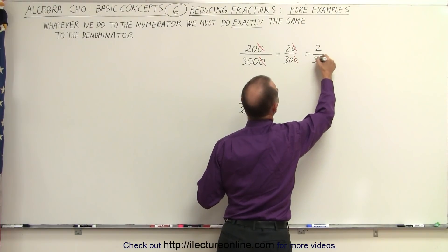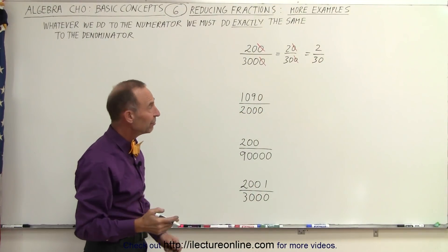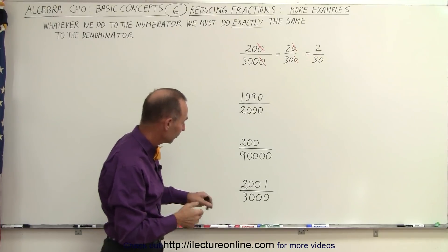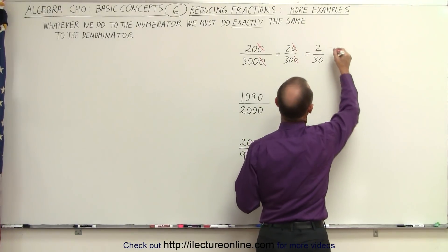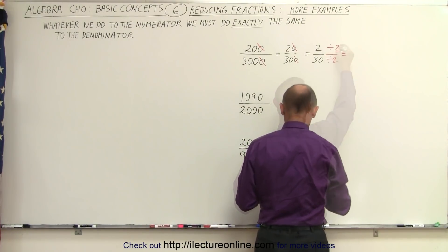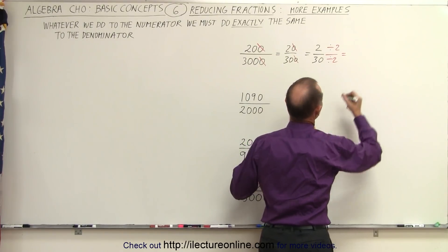Now notice, even though we can no longer divide by 10, they're both even. Since they're both even, we can divide both of them by the number 2, and we end up with 1 divided by 15.